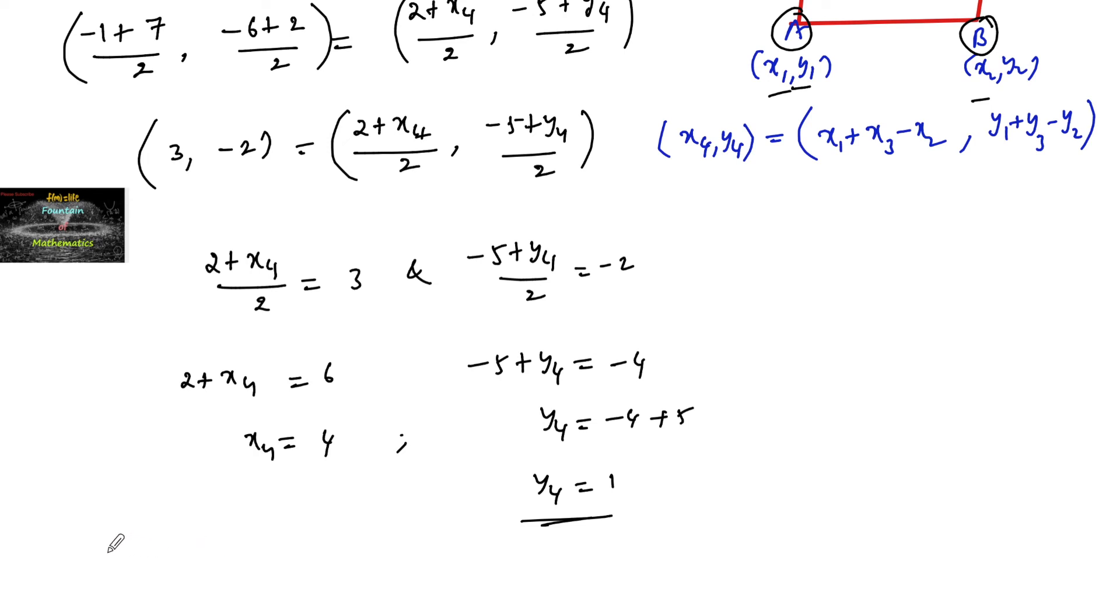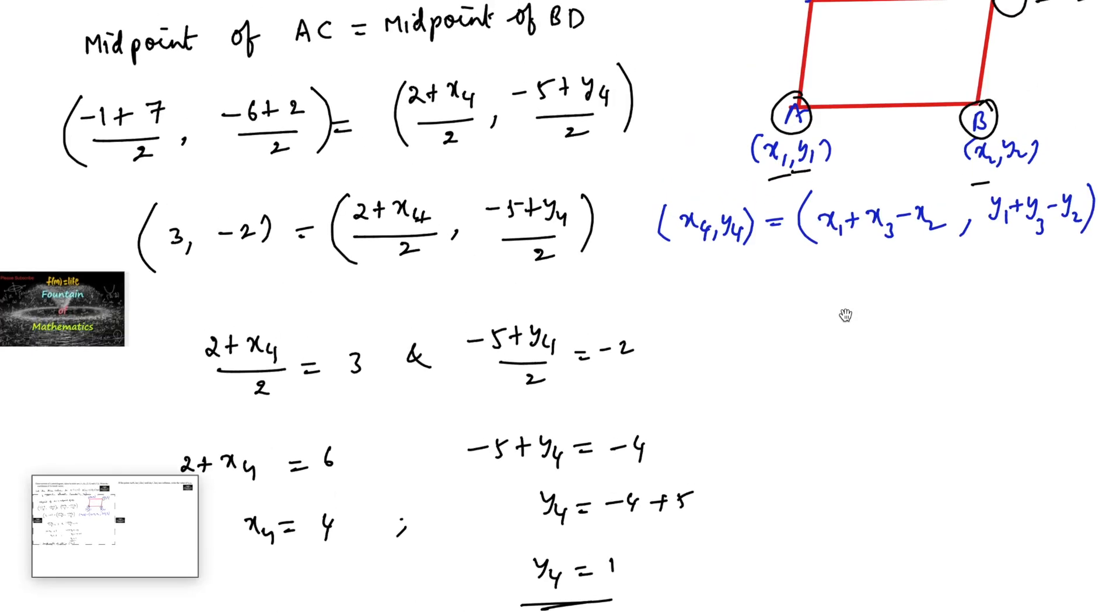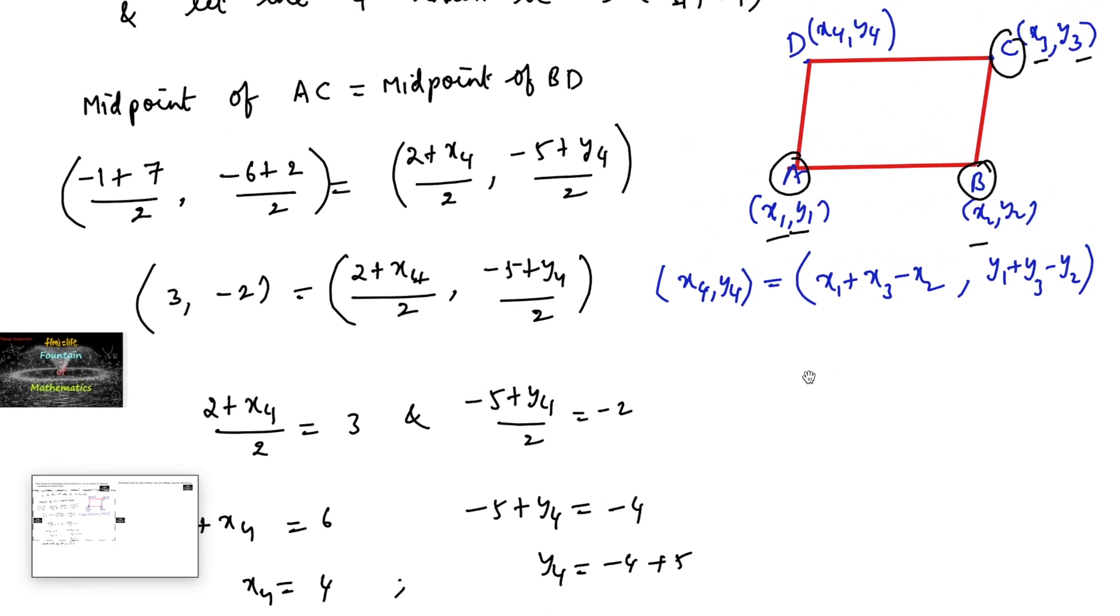Therefore, the fourth vertex of the parallelogram is (4,1). We can verify this using the shortcut formula as well.